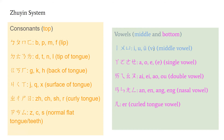For vowels, you have the middle vowels — yi, u, yu — which are in blue and can be combined with the bottom vowels to make a new sound. The bottom vowels are: a, o, e as single vowels; ai, ao as double vowels; and then an, en, ang, ong, which are nasal vowels; and er, which is the curly tongue vowel.